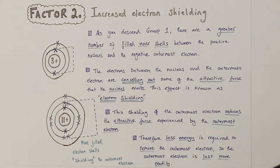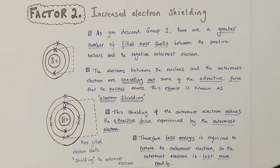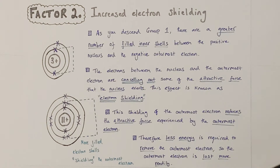As you descend group 1, there are a greater number of filled inner electron shells between the positive nucleus and the negative outermost electron. The electrons in these inner shells have a cancelling out effect on some of the attractive force that the nucleus is able to exert — nullifying some of that positive charge effectively. This phenomenon is known as electron shielding. This shielding effect will decrease the attractive force experienced by the outermost electron, because the inner shielding electrons are cancelling out some of the positive charge which would be attracting that outermost electron.